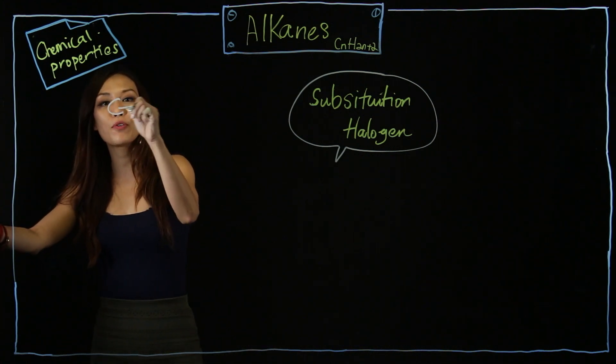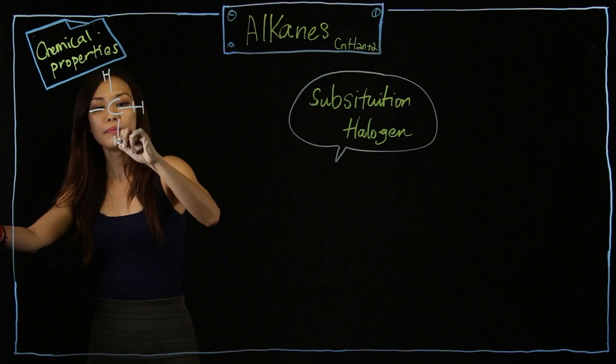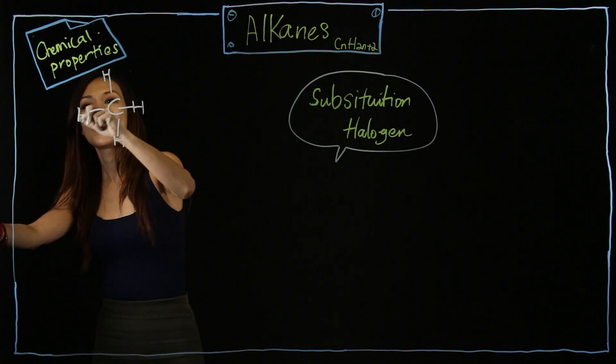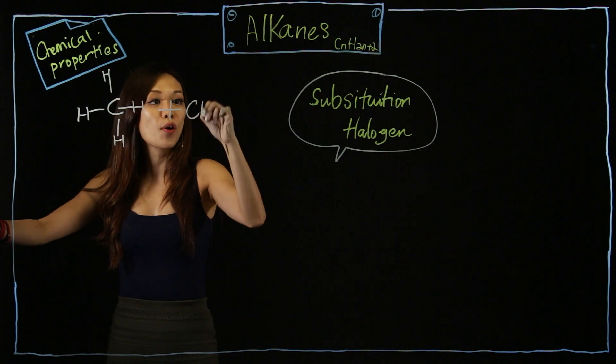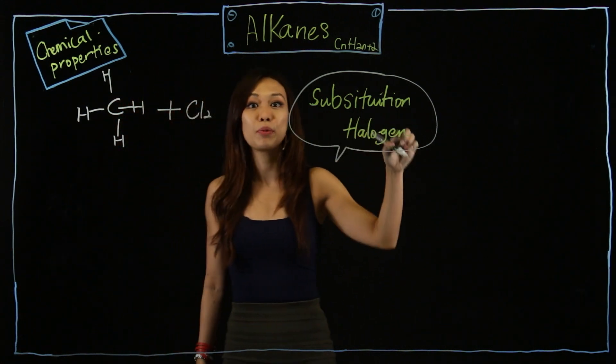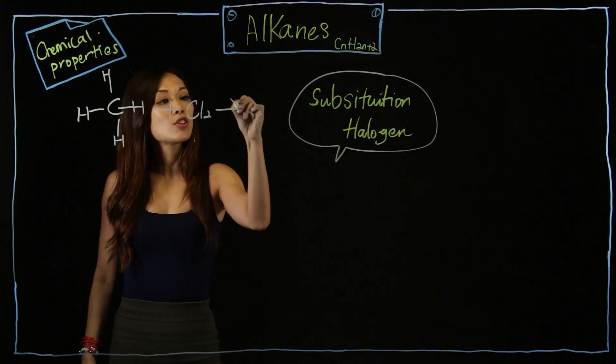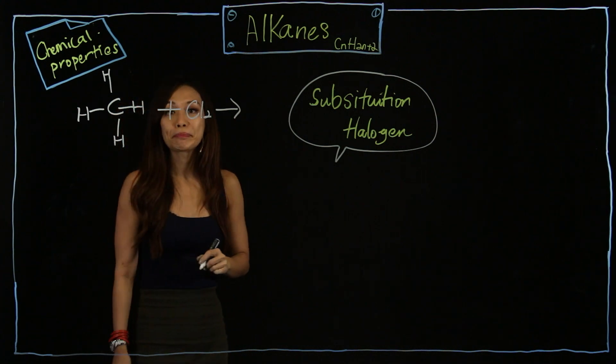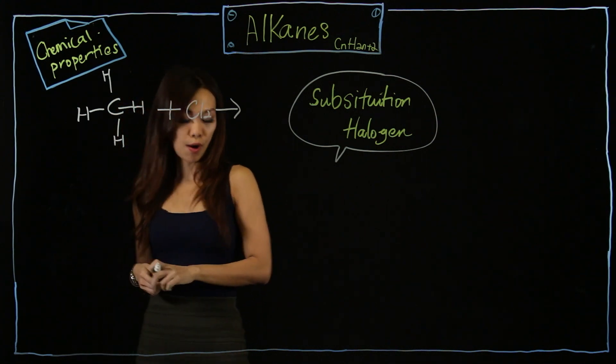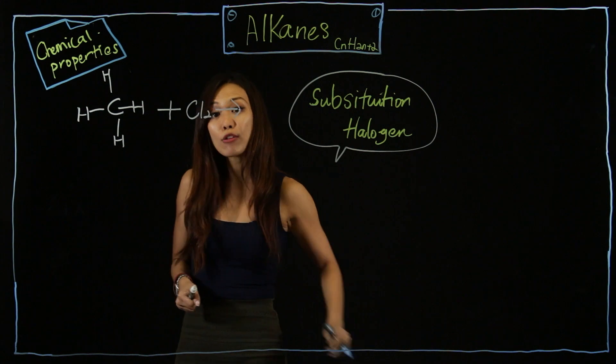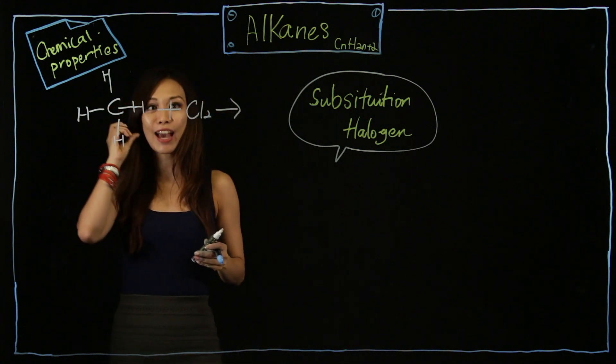So I'm going to show you from methane first. React with chlorine because remember substitution with halogen. Halogen is group 7 of the periodic table. So I'm going to use chlorine. Now, all halogen exists in diatomic, so Cl2.